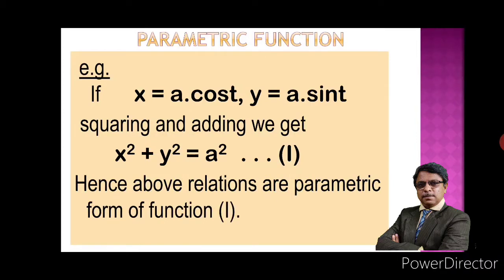So x = a·cos(t) and y = a·sin(t) are the parametric form of the function x² + y² = a². We have three relations: x is a function of t, y is a function of t, and by eliminating t we get y as a function of x. We have dx/dt, dy/dt, and dy/dx. We need to find the relation between these three derivatives — that is the formula for derivatives of parametric functions, which we can prove as a theorem.